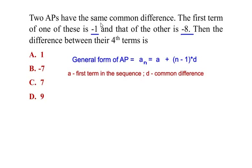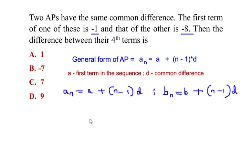Now here we have two arithmetic progressions, so let us write down the formula for each. We can write the first arithmetic progression as a_n is equal to a plus n minus 1 times d, and the second arithmetic progression as b_n is equal to b plus n minus 1 times d. The common difference is the same, so we take it as d in both cases.